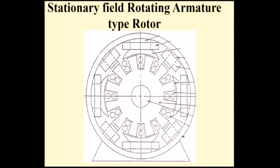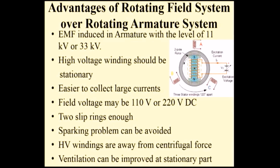There is an obvious question: which one is best? The rotating field stationary armature is the best. Why? Because most alternators operate at 11 kV or 33 kV — that is 11,000 volts or 33,000 volts. Such high voltage is induced in the armature. If that high-voltage winding is stationary, it is much better — that is why the stationary armature rotating field configuration is preferred.